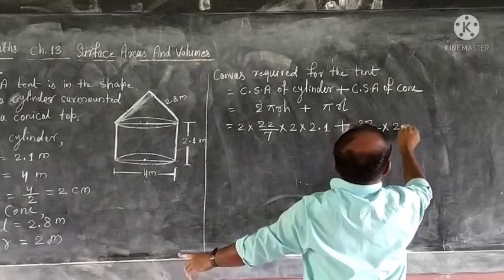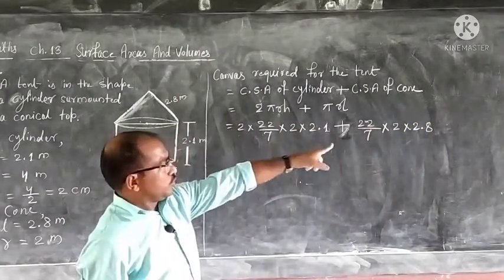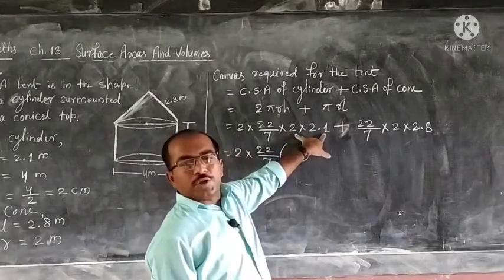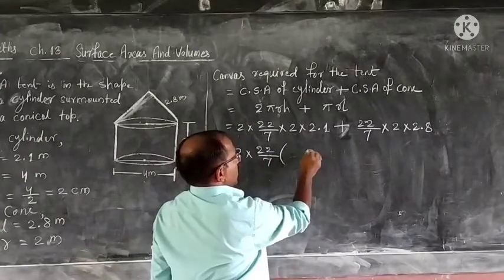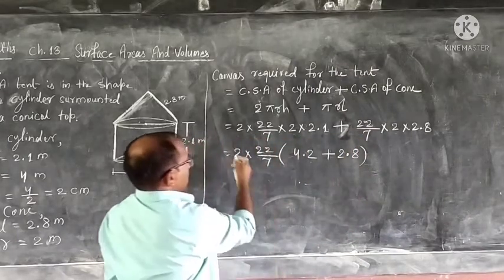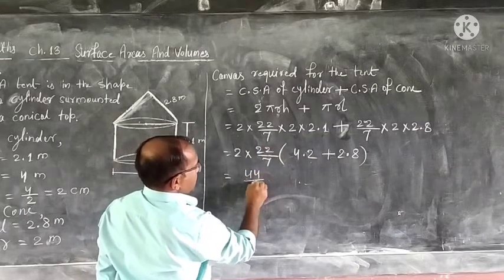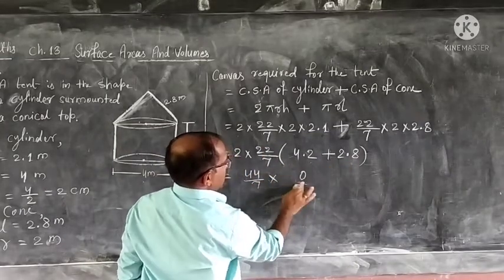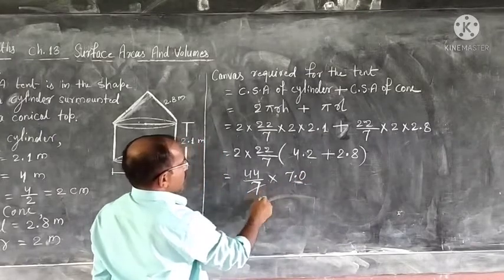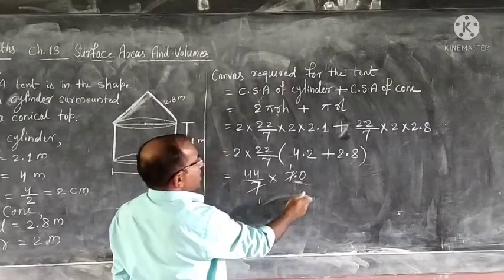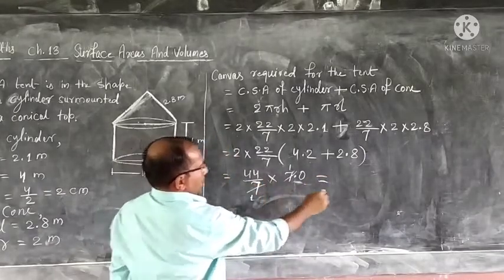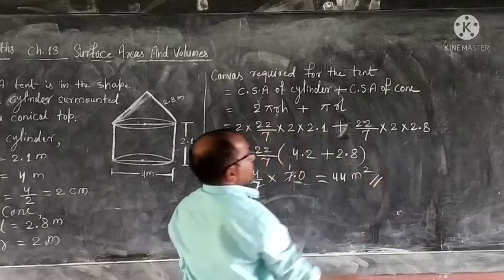For the conical portion, π = 22/7, radius 2, and slant height 2.8. Taking common factor 2 × 22/7, remaining: 2 × 2.1 plus 2.8. After calculation, we get 44 square meters. So canvas needed for this tent is 44 m².